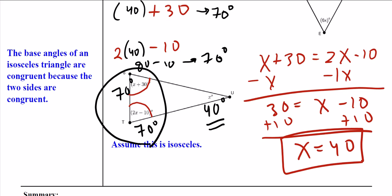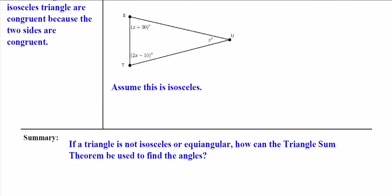As you progress in this class and you move on to algebra 2, trigonometry, the triangle sum theorem is still gonna be very important. Even in calculus, it's very important. For your summary: if a triangle is not isosceles or equiangular, how can the triangle sum theorem be used to find things?